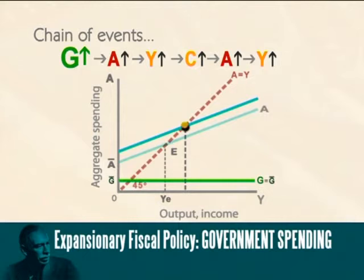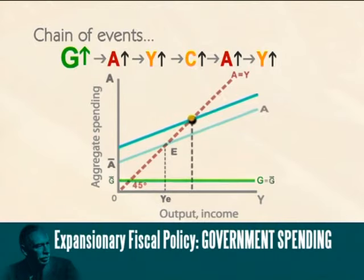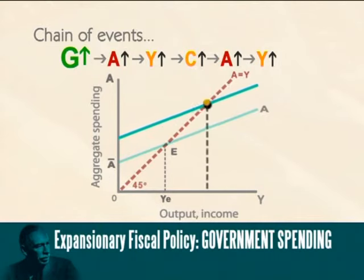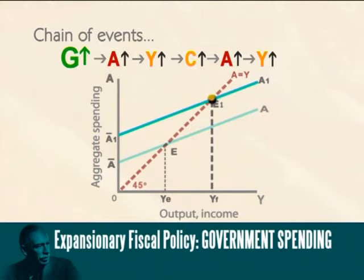The market is no longer at equilibrium point E. The rise in total spending — the increased demand — stimulates production and income. And with the multiplier pushing it, the equilibrium level of income, Y-E, moves upwards until we reach the new equilibrium at E-1. This process also creates jobs, and the market moves closer to a level of full employment.